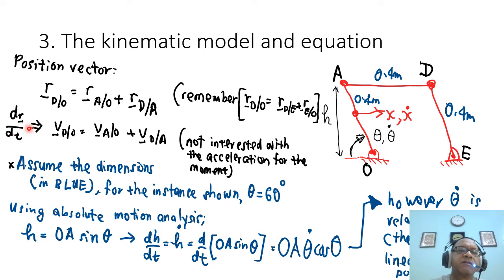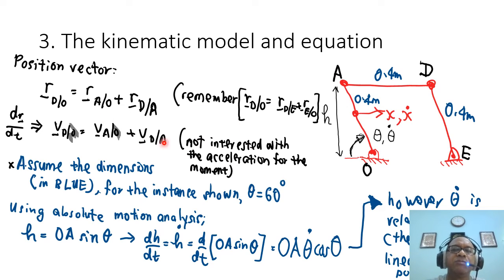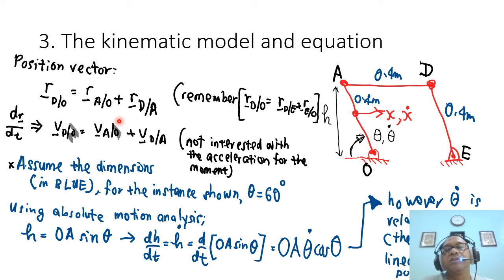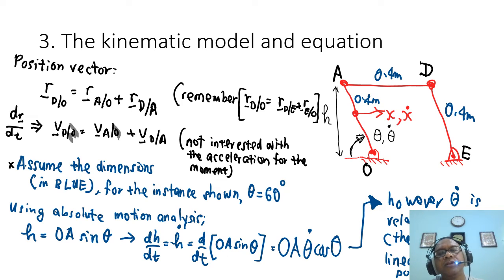Differentiating the position vector gives the velocity vector: V_D equals V_A plus V_D relative to A. Acceleration is not considered here since the motor is assumed to move at constant speed — we only want to know how fast the platform is deployed. Assumed dimensions are 0.4 m for each link, theta equals 60 degrees, and absolute motion analysis is used to find the relationship between the input and output.